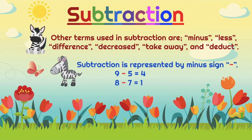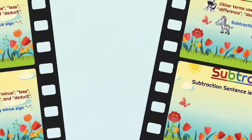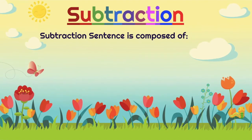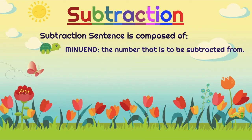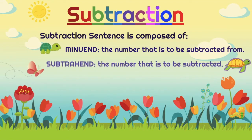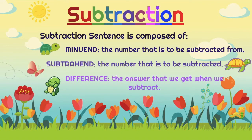Subtraction is represented by the minus sign. A subtraction sentence is composed of the following: the minuend, or the number that is to be subtracted from; the subtrahend, or the number that is to be subtracted; and the difference, or the number that we get when we subtract.